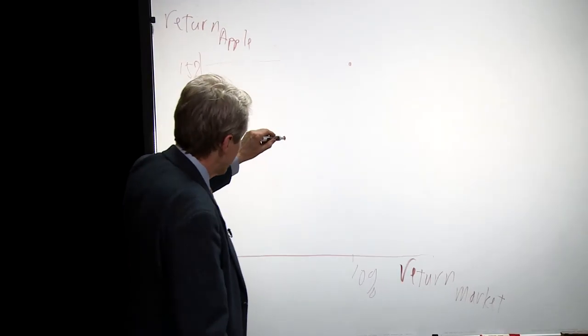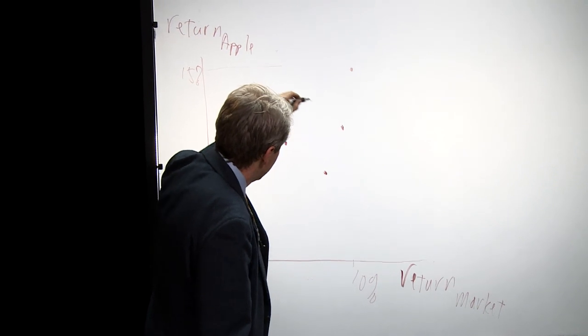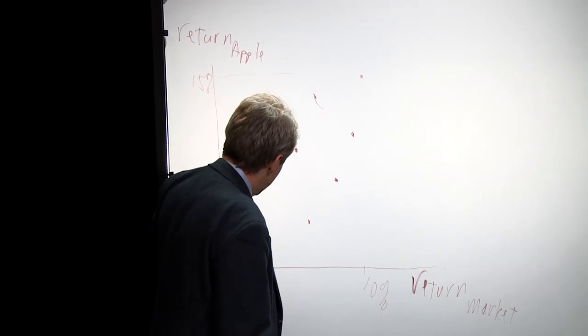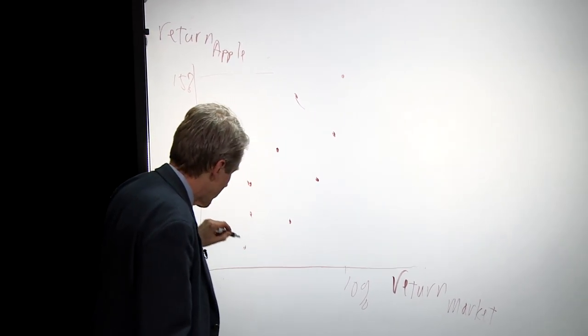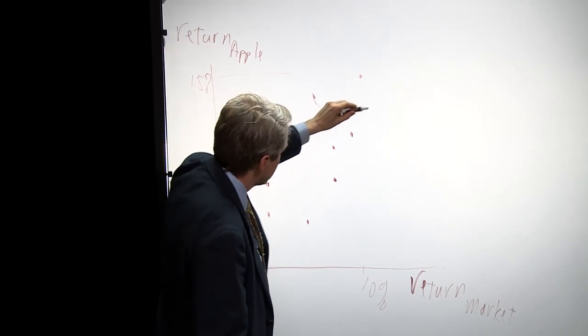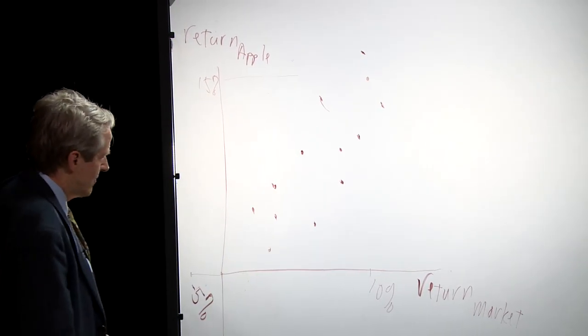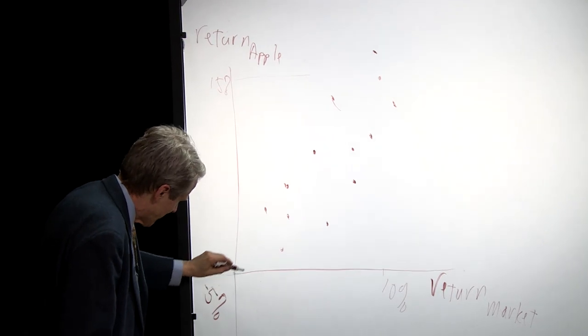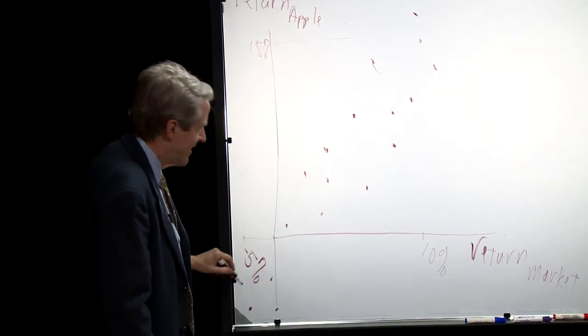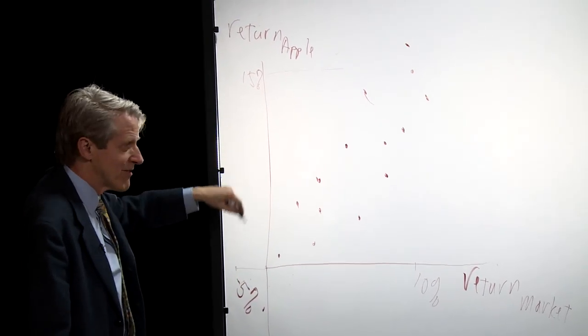And then I can fill in many years. Each year is a point. And this is a scatter of points. I've got a lot of years shown. And now when you see this, some of them are negative or close to zero.